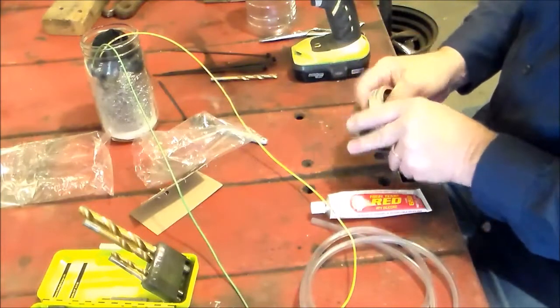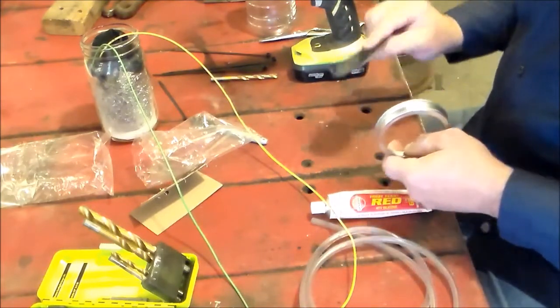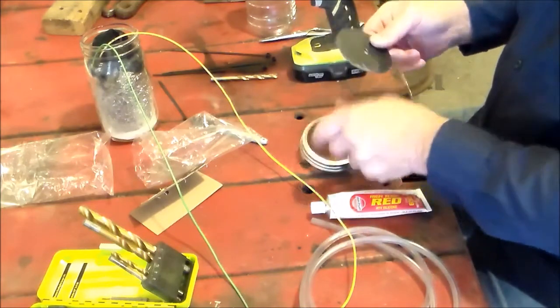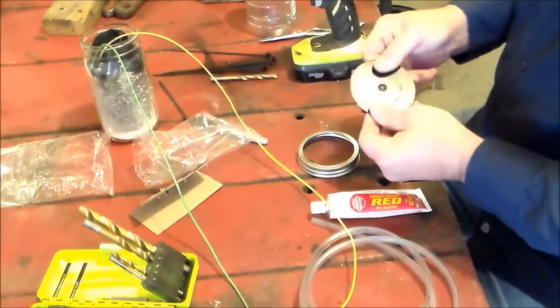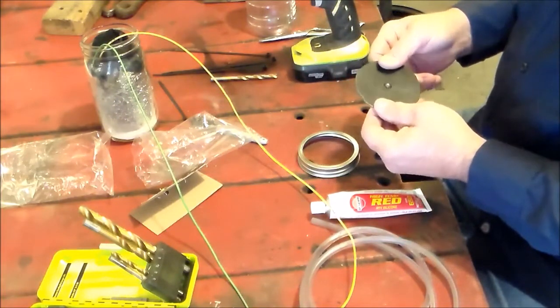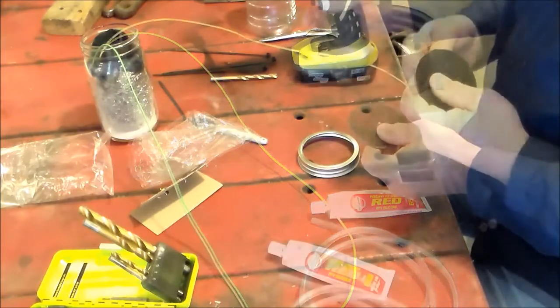All right, so next I took the ring from the mason jar and used a coffee can lid and just made a plastic ring because I was going to have these electrical wires running through it and everything.